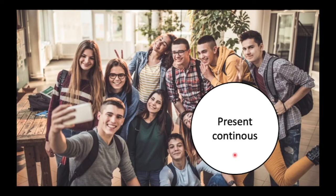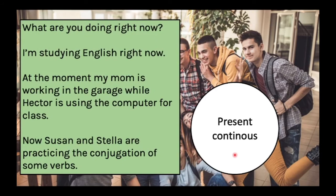Now let's see some examples of the present continuous. What are those guys in the picture doing? They are taking a selfie. What are you doing right now? I'm studying English right now. You can also make a negative sentence: I'm not studying English, I'm watching TV. At the moment, my mom is working in the garage while Hector is using the computer for class — two continuous actions happening as we speak, right now.